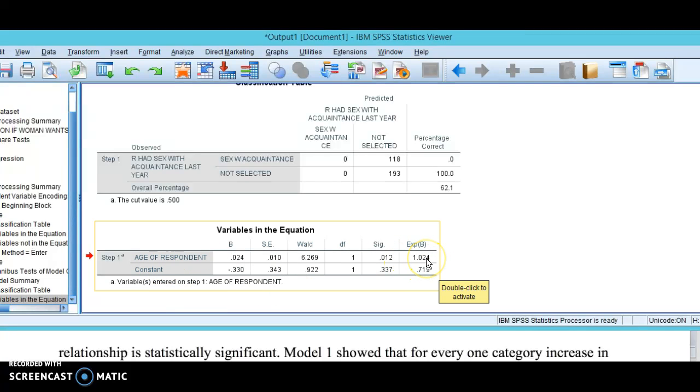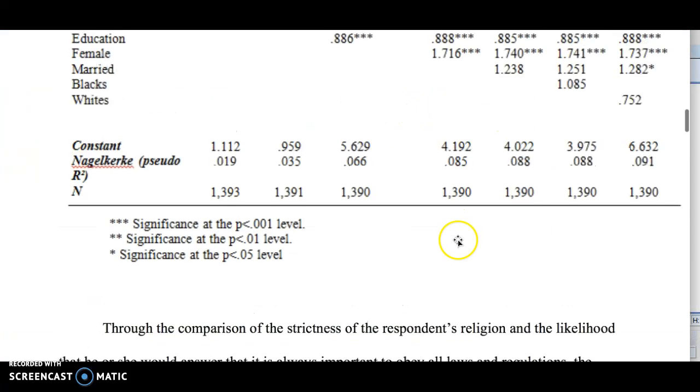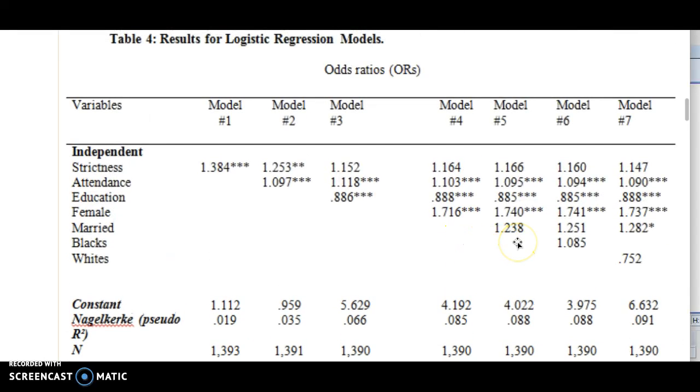Well, 1.024 literally means that you are 0.024 or two percent more likely to have sex with an acquaintance in the last year with every year that you age. The older you get, the more likely that is. But it's only a tiny bit—like two percent more likely. Your likelihood goes up just barely. It's not very much, but it does increase. Those are the only things you have to report in this table.